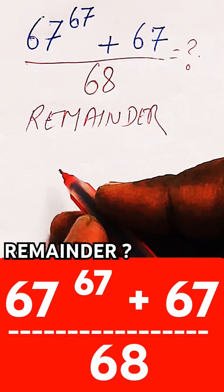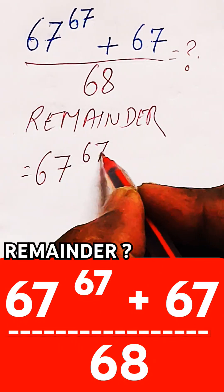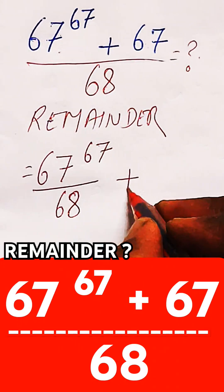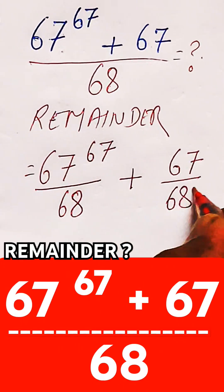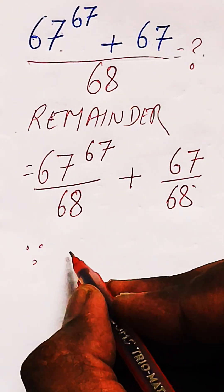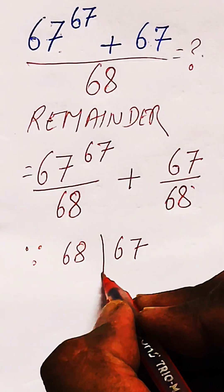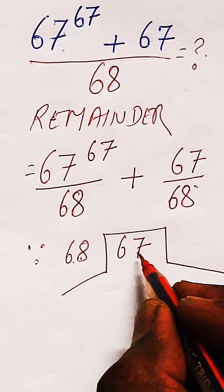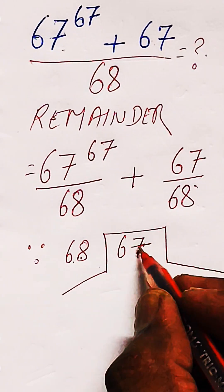When you simplify the above expression, you can write it as 67 power 67 divided by 68. You just split it separately and make it two fractions, so the expression will look like this. Now, when you divide 67 by 68 — if it had been 68 it would divide completely.